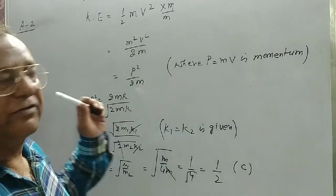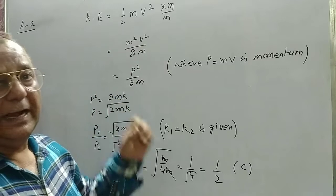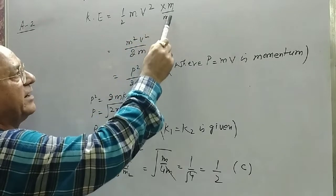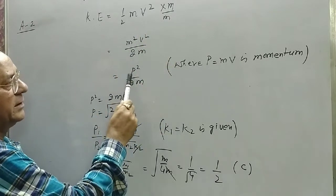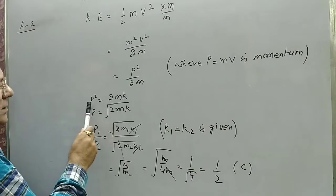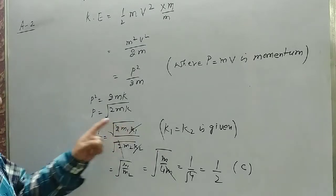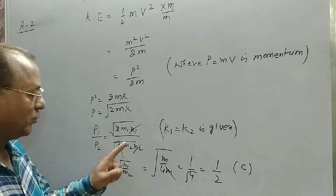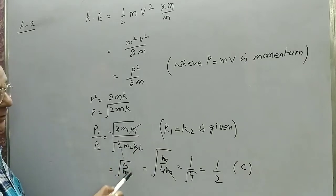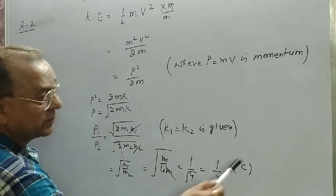Let us take question number two, which is based on the interrelation of kinetic energy, momentum and mass. Kinetic energy K = ½mv². Multiply and divide by m: this becomes m²v²/2m = p²/2m, where p = mv is momentum. Therefore p² = 2mK, so p = √(2mK). For comparison, since K₁ = K₂, the ratio p₁/p₂ = √(m₁/m₂). With masses m and 4m, the ratio is √(1/4) = 1/2. Answer is C.